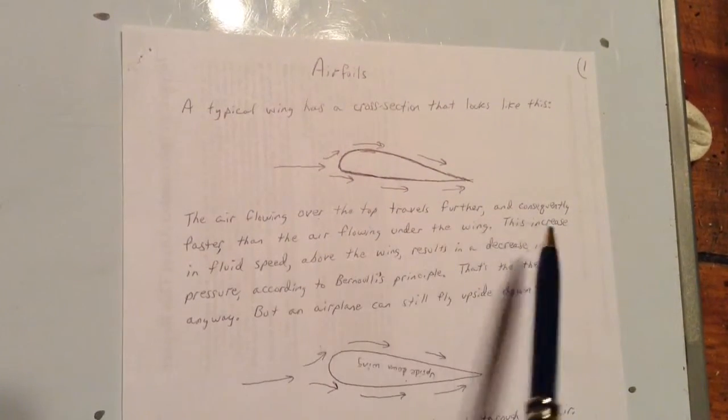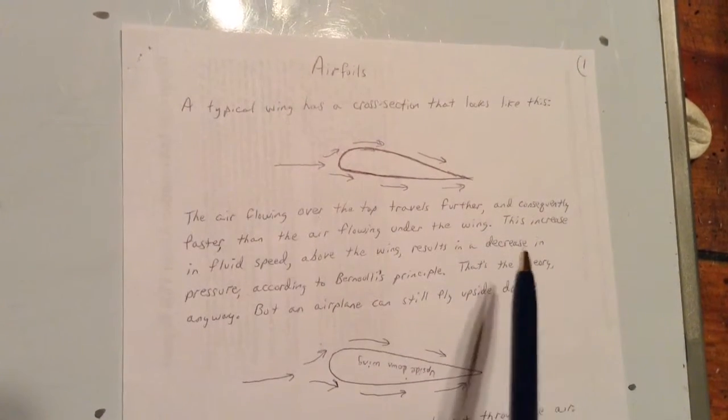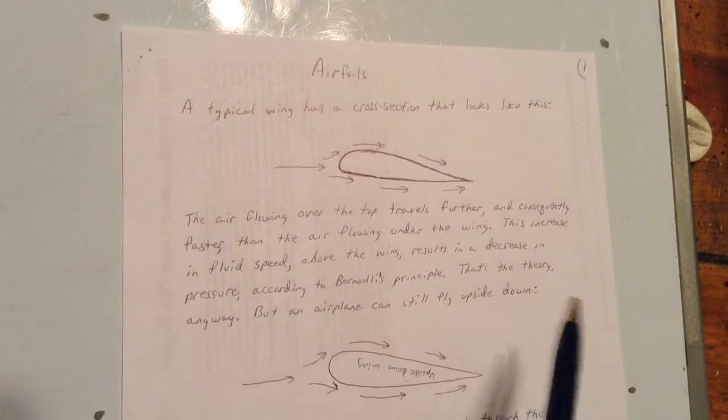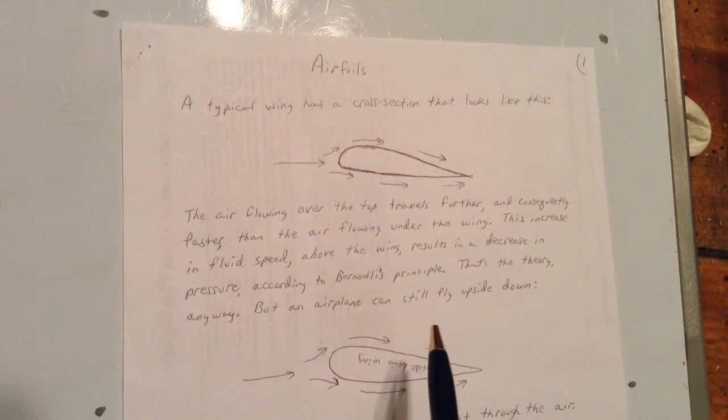The air flowing over the top travels further and consequently faster than the air flowing under the wing. This increase in fluid speed above the wing results in a decrease in pressure according to Bernoulli's principle.